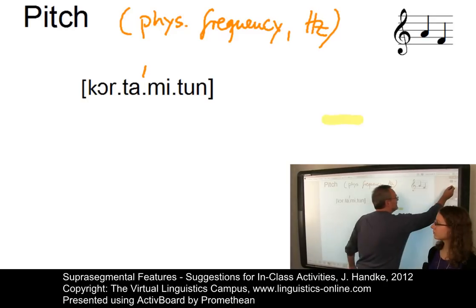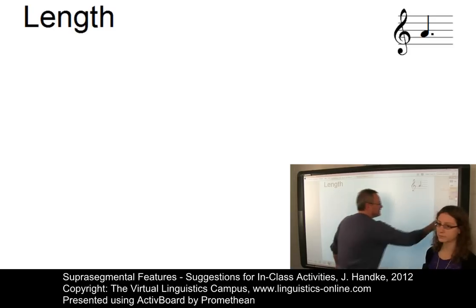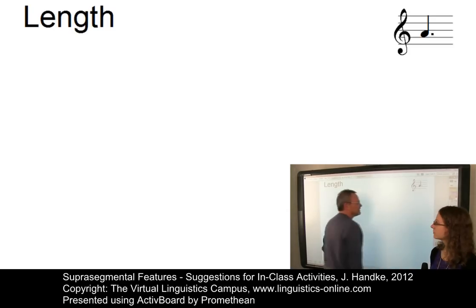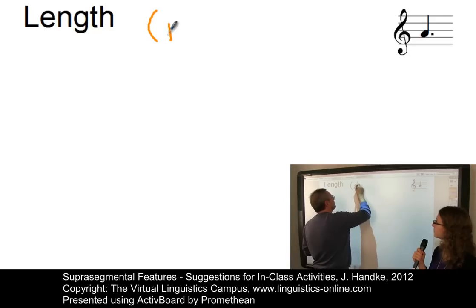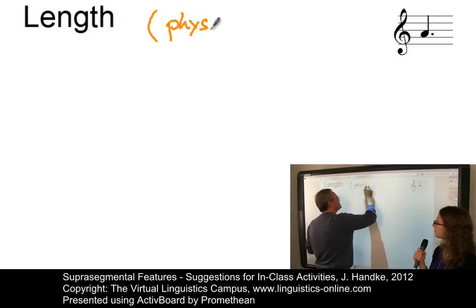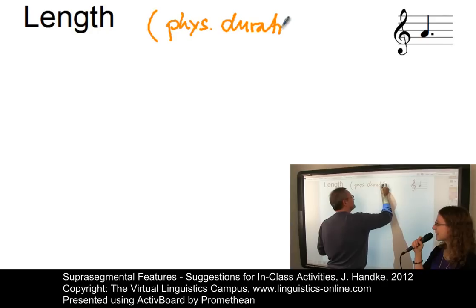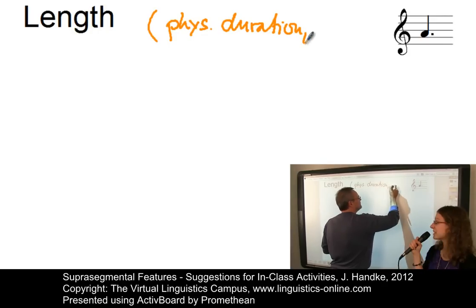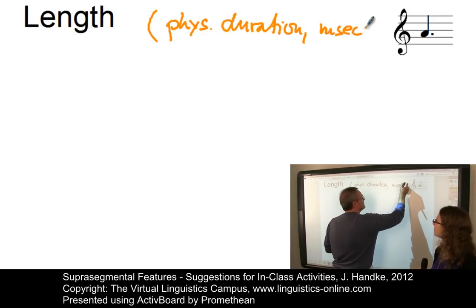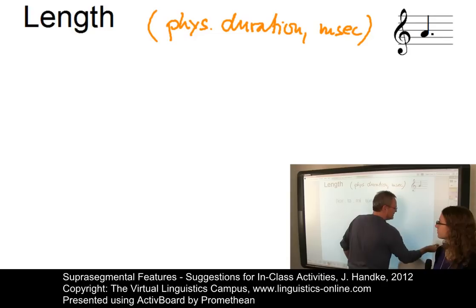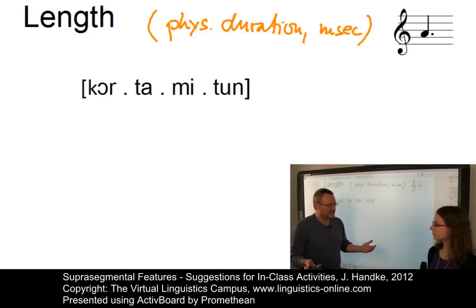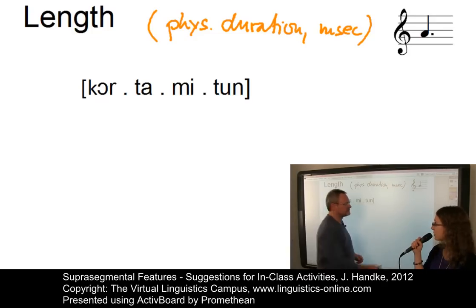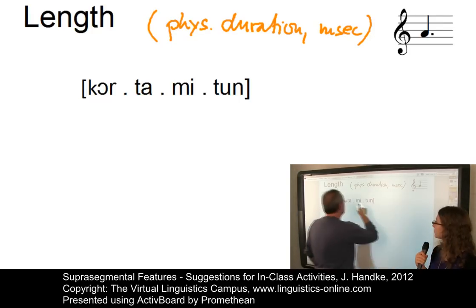Stress can be accompanied by length effects. This is the third suprasegmental feature — the physical counterpart is duration, measured in milliseconds, because we speak so fast. Again, our word: I spread the syllables out a little — KOR-TA-MI-TUN. And how do we mark length? With a colon. So this would be KOR-TA:-MI-TUN. Could we make consonants longer? For example, the last consonant in the first syllable — KOR:-TA-MI-TUN.